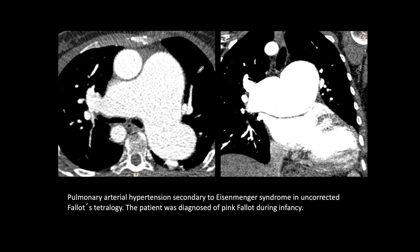The final diagnosis is pulmonary artery hypertension. In this patient, it was secondary to Eisenmenger syndrome in a patient with tetralogy of Fallot. The patient was diagnosed with pink Fallot during infancy and for some reason was not operated on — and that's what they ended up with.